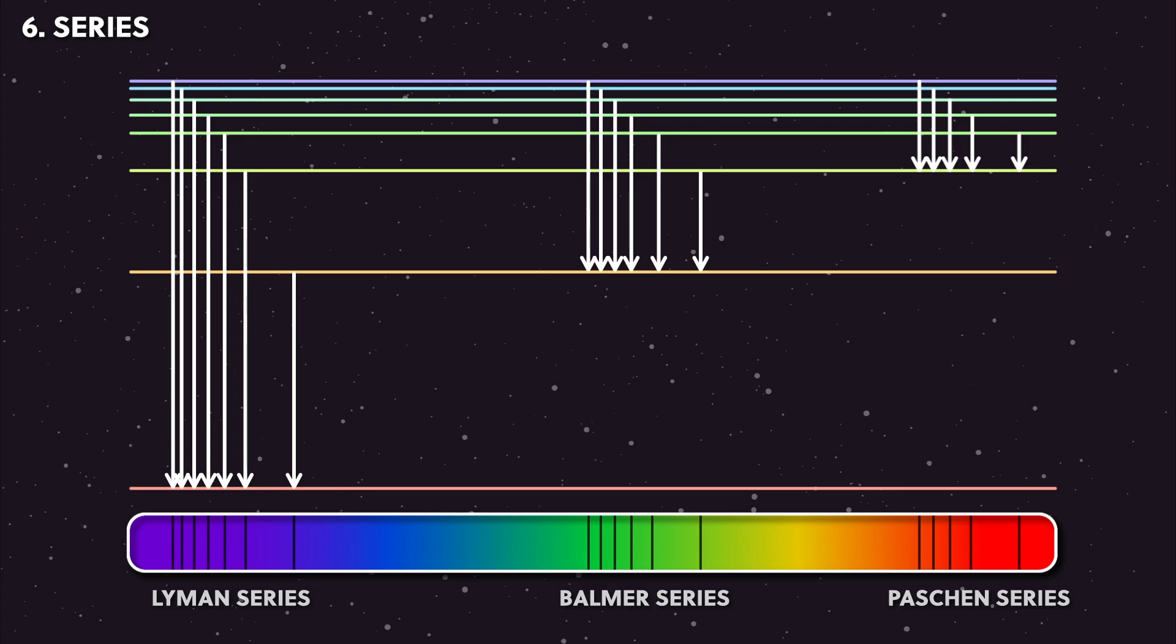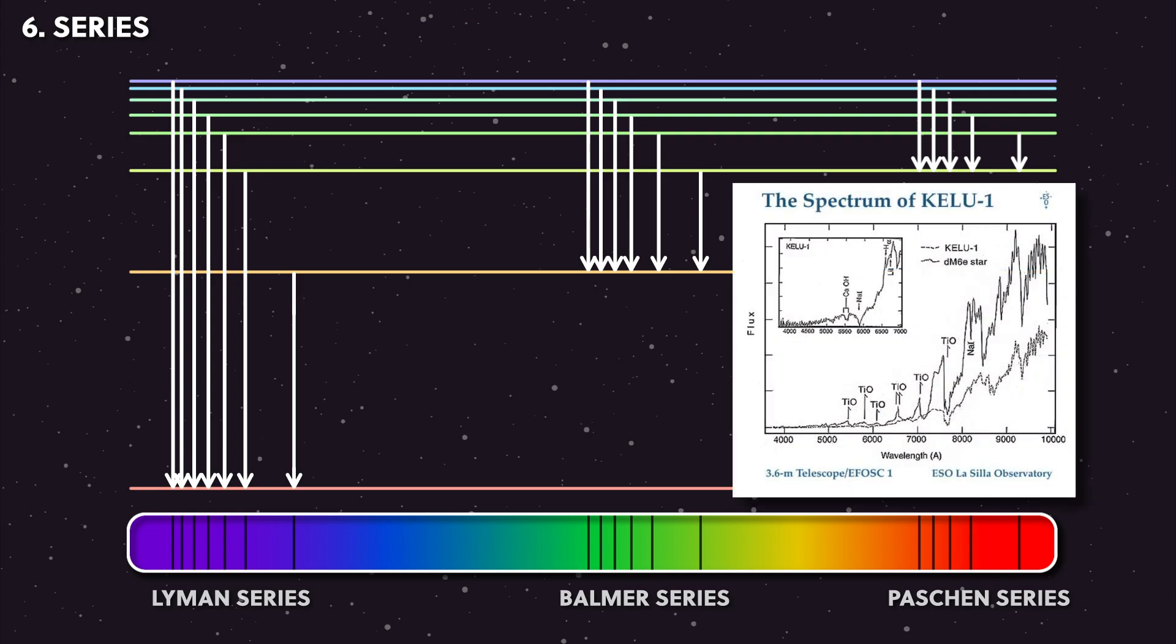Note that this is not to scale—in reality these lines are far more spread out on the wavelength scale, and there are even more series at longer wavelengths. You should also note that I've only been using hydrogen as examples because it's only got one proton and one electron, so it's got a relatively simple spectrum. But the spectra of other elements are more complex, and a real observation of many different gases overlapping is incredibly complex.